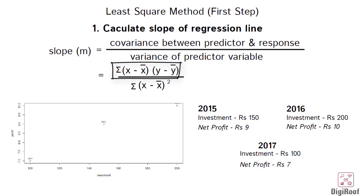For calculating covariance we need to subtract corresponding values of predictor and response with their respective mean and then multiply the two differences. We then need to add up all the products to get the covariance between the predictor and the response variable.